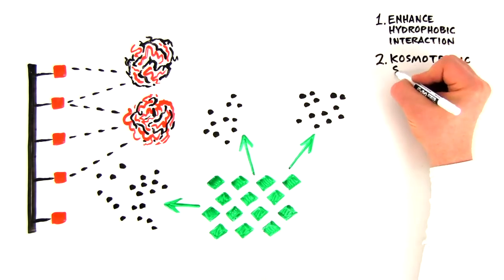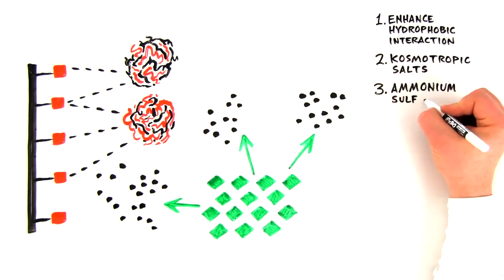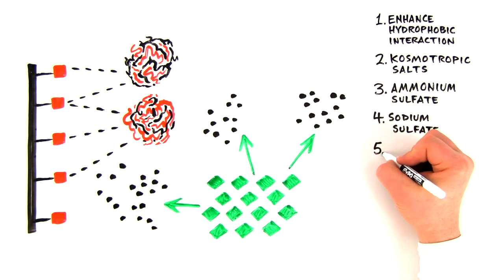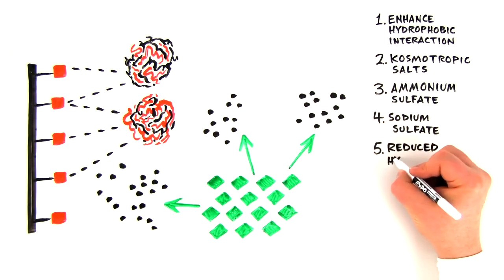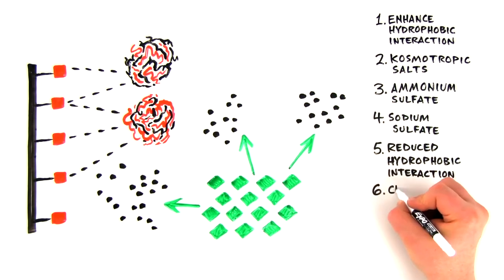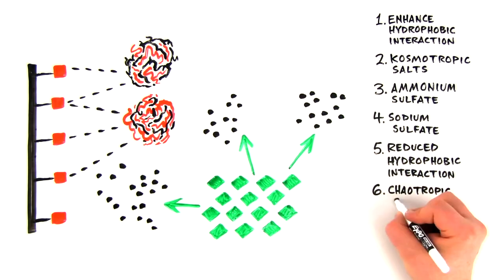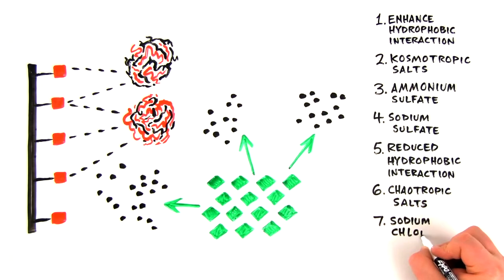Generally, kosmotropic salts such as ammonium sulfate and sodium sulfate enhance formation of the hydrophobic interactions. Conversely, using chaotropic salts such as sodium chloride, the formation of hydrophobic interactions is rather reduced. Higher temperatures tend to favor the formation of hydrophobic interactions.